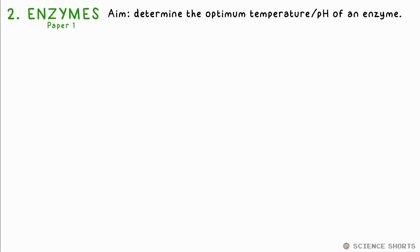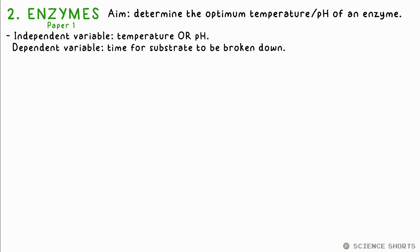Biology 2: enzymes. The aim is to determine the optimum temperature or pH for an enzyme, usually done with the enzyme amylase and substrate starch, but it could be something else instead. The independent variable is either temperature or pH, which we change using a water bath or buffer solutions respectively. The dependent variable is the time taken for all of the starch — the substrate — to be broken down.